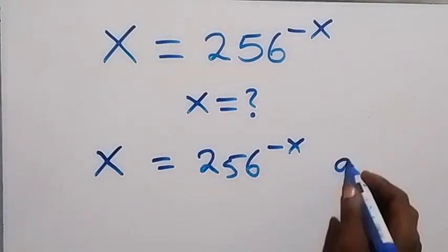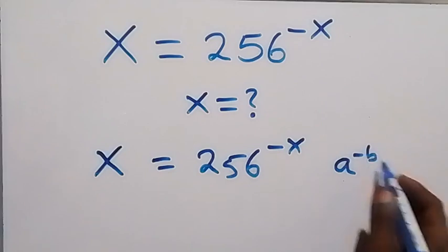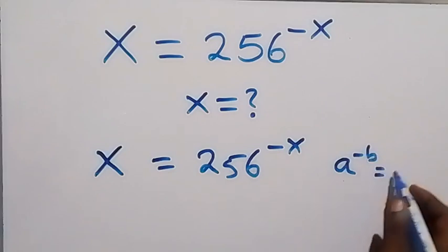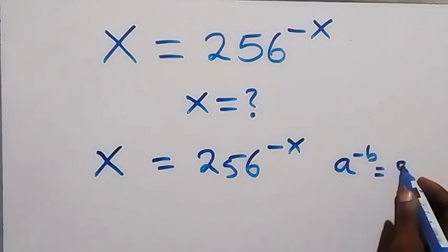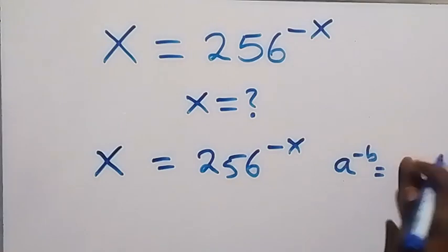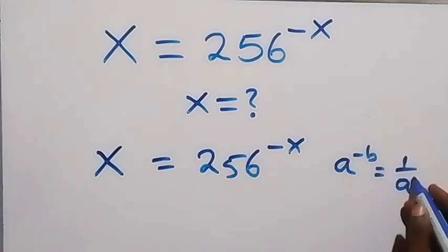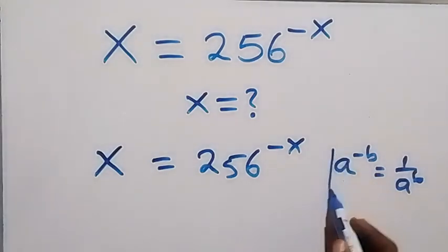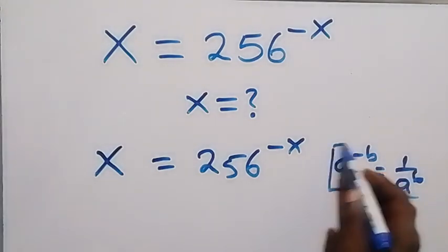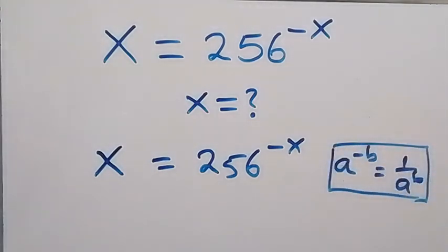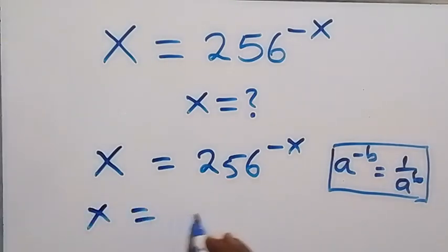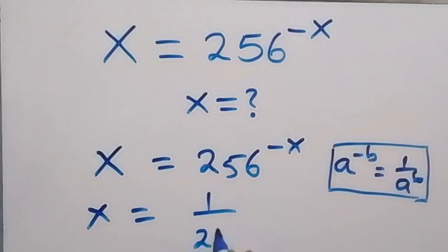From the law of indices, when we have a raised to the power of minus b, this is the same as 1 over a raised to the power of b. So we rewrite the right-hand side: x equals 1 over 256 raised to the power of x.